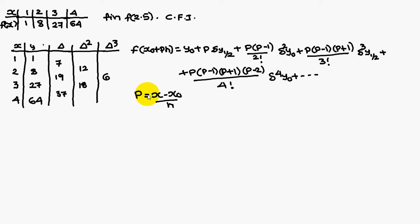The p formula for forward interpolation is x minus x0 by h. x stands for 2.5 and x0 is not 1. x0 you do not consider as 1. Here we have to draw a central line.